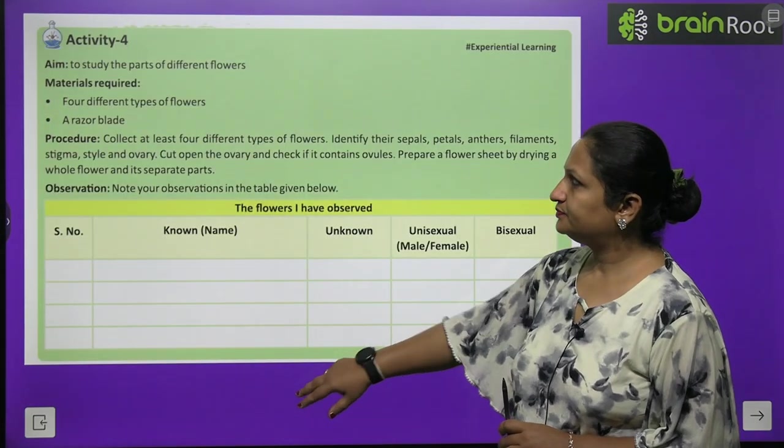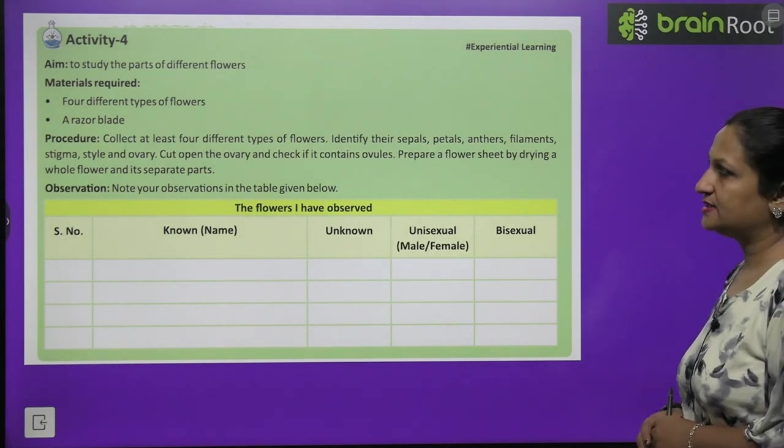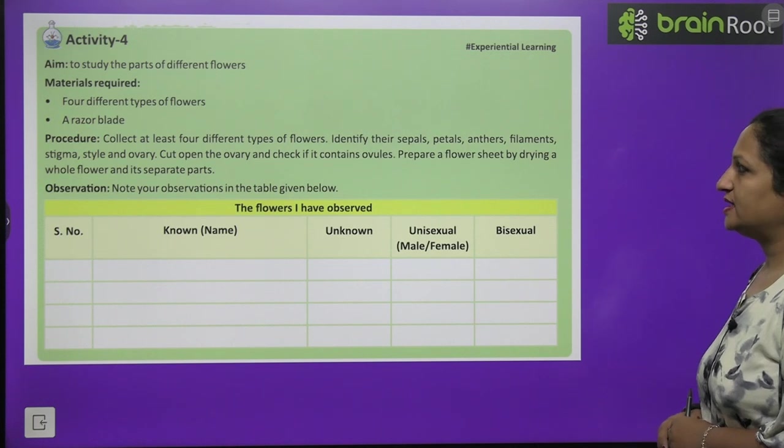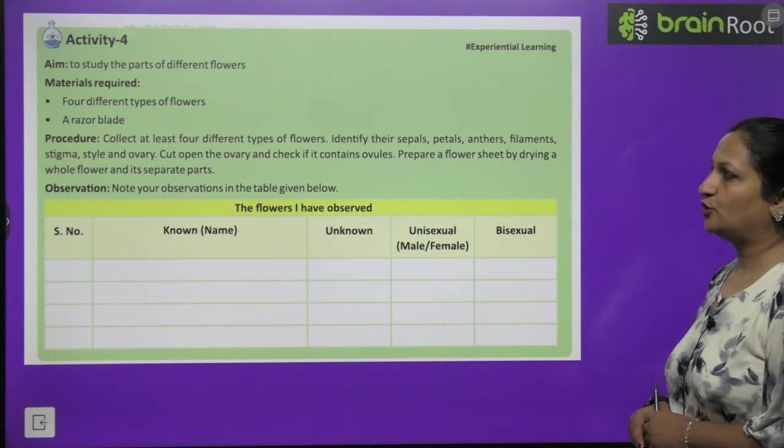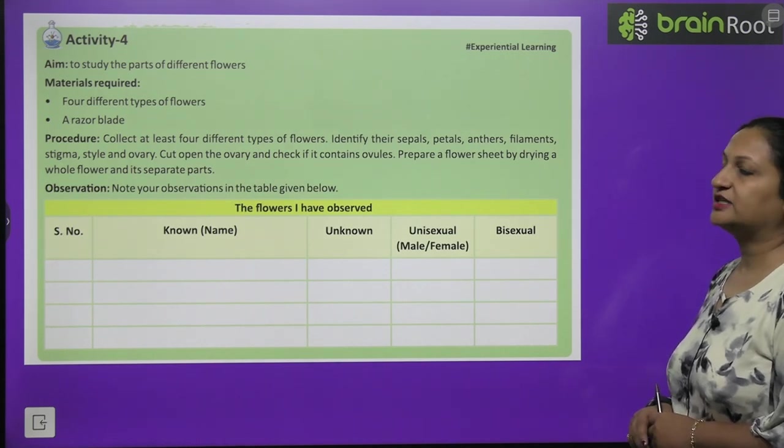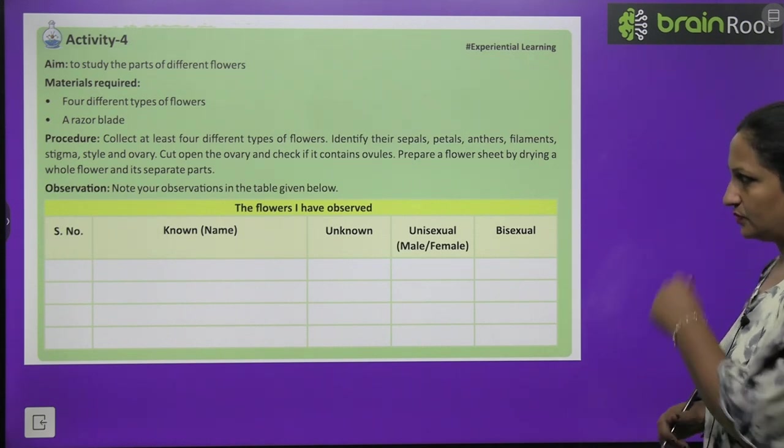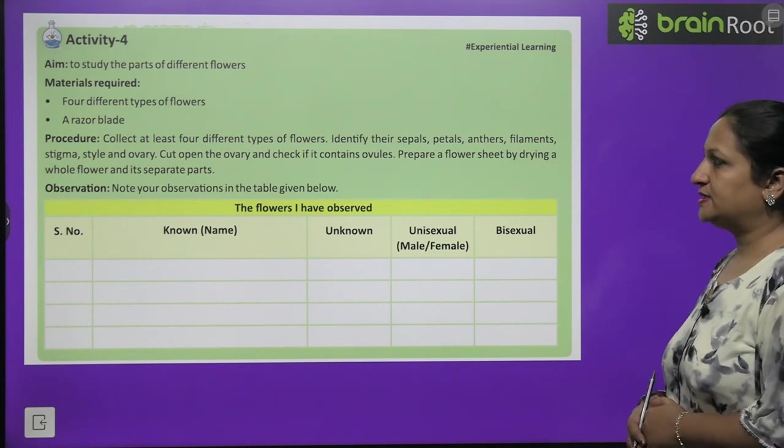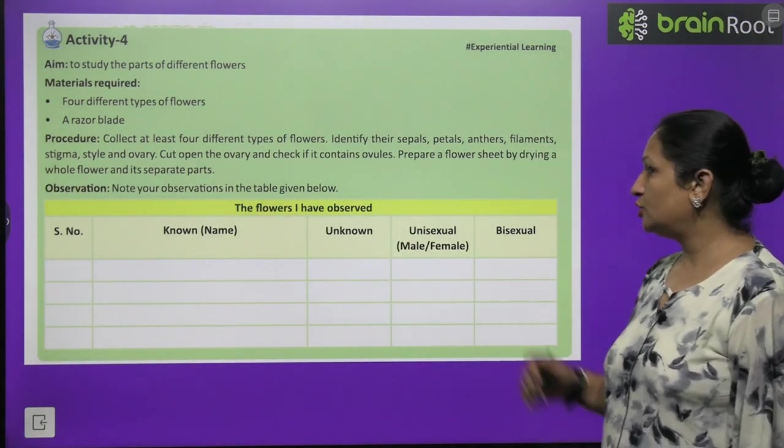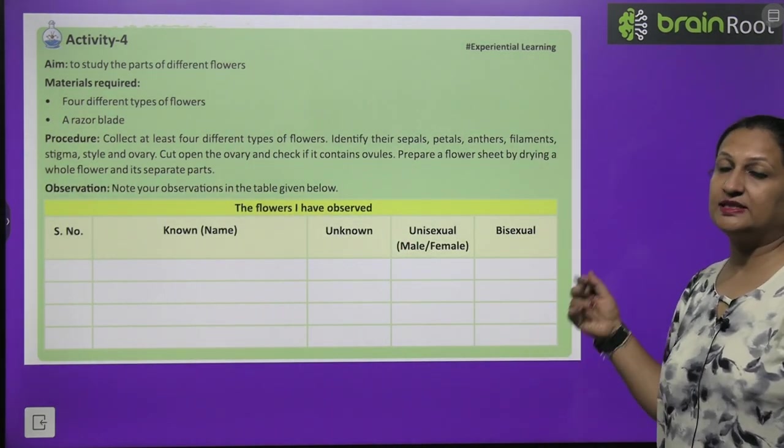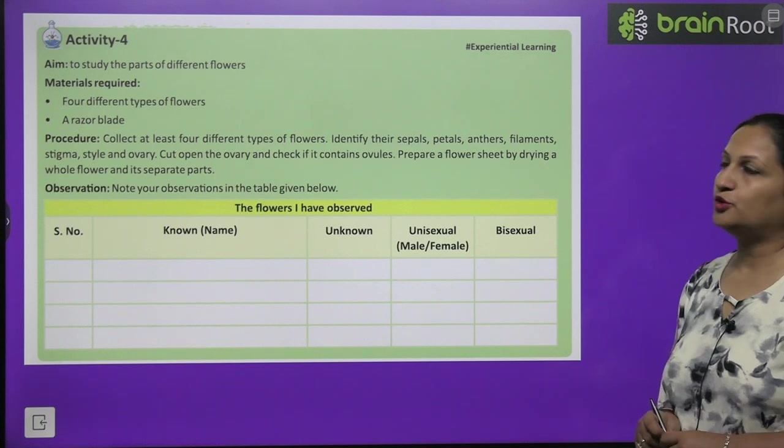Now have a look on activity children. To study the parts of different flower. Material required: four different types of flowers, a razor blade. Collect at least four different type of flowers. Identify their sepals, petals, anthers, filament, stigma, style and ovary. Cut open the ovary and check if it contains ovules. Prepare a flower sheet by drawing a whole flower and its separate parts. Note down your observations in the table given below. Here you will write the name of your flowers - whether known or unknown. Then you will see if male part is present, female part is present, or both are present.